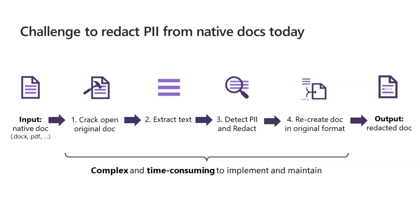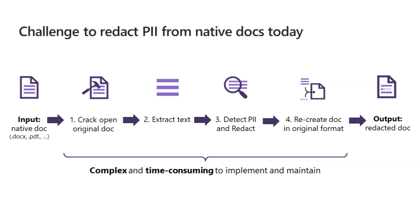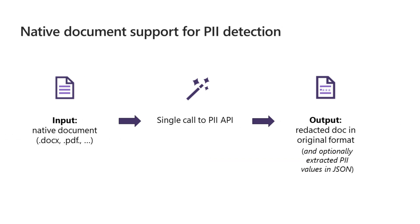To address this challenge, we are introducing built-in support for native documents for PII detection. With this new capability, the service accepts a native document as input, extracts PII entities, and generates a redacted document in the original format as output. It also optionally returns the identified PII entities.